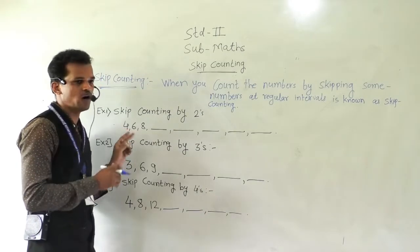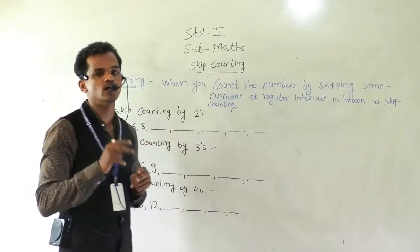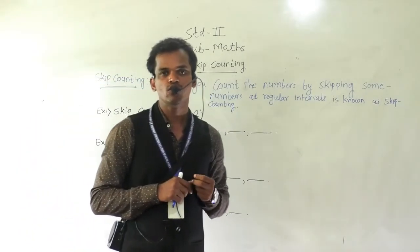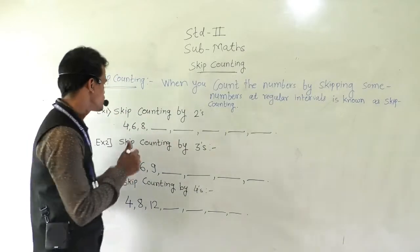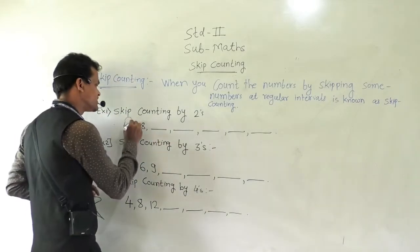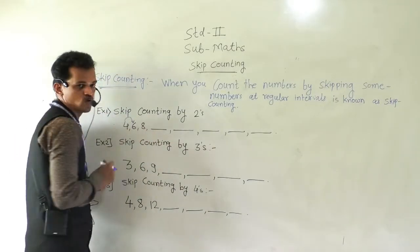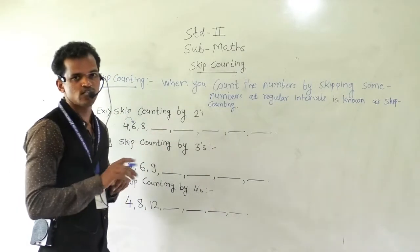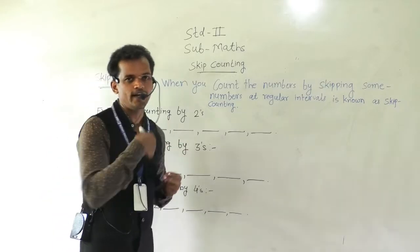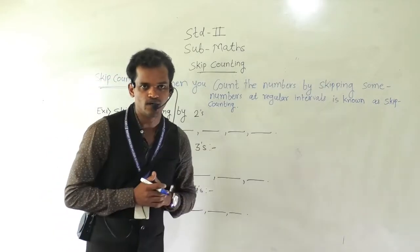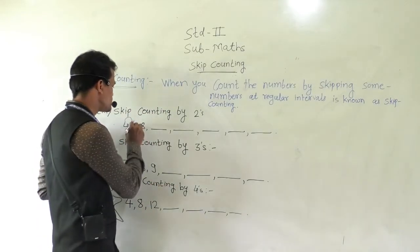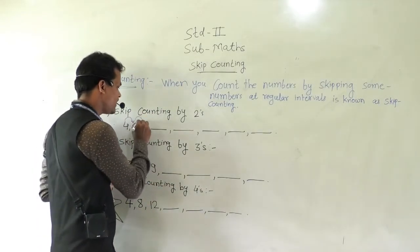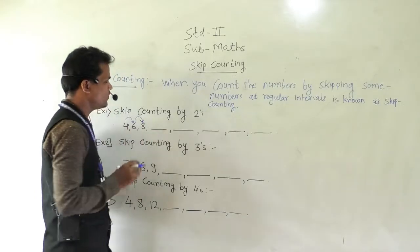After you count 2 fingers forward — 5, 6 — so 6 is here. Then again, skip 2 and write the next number. So here: 6, 7, 8.